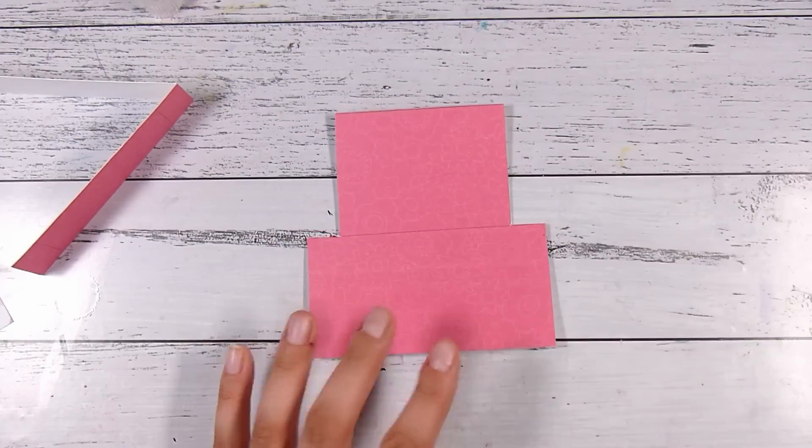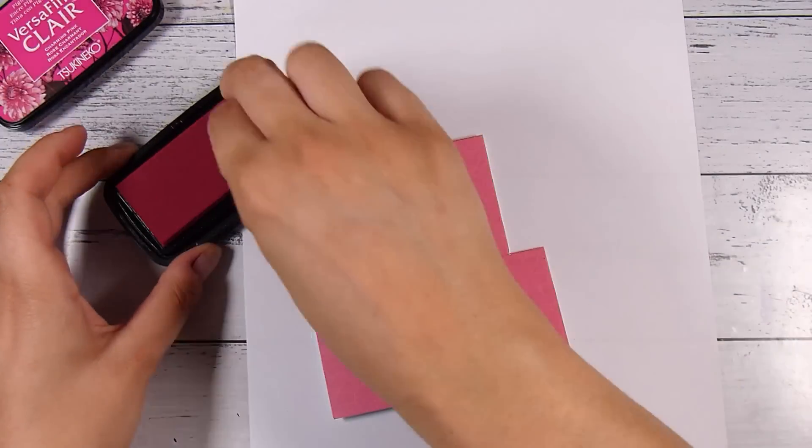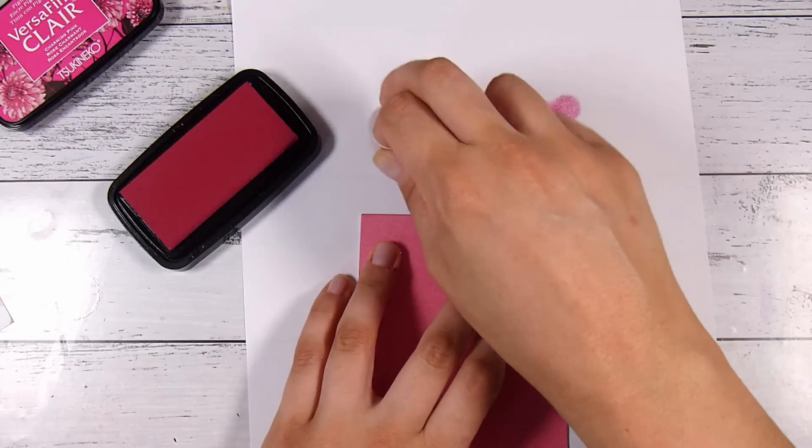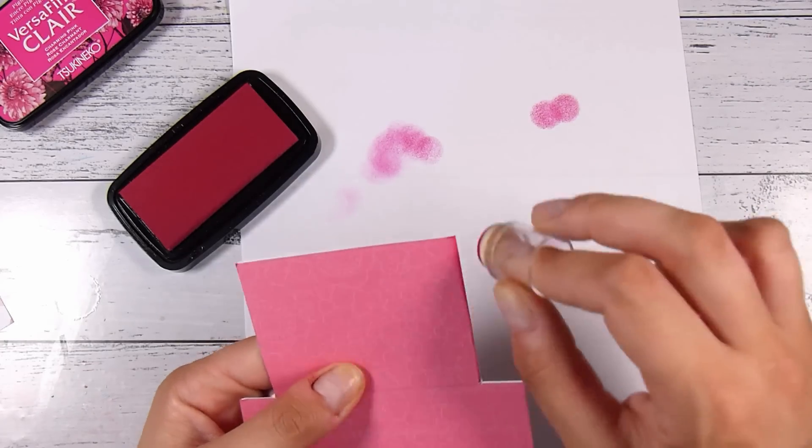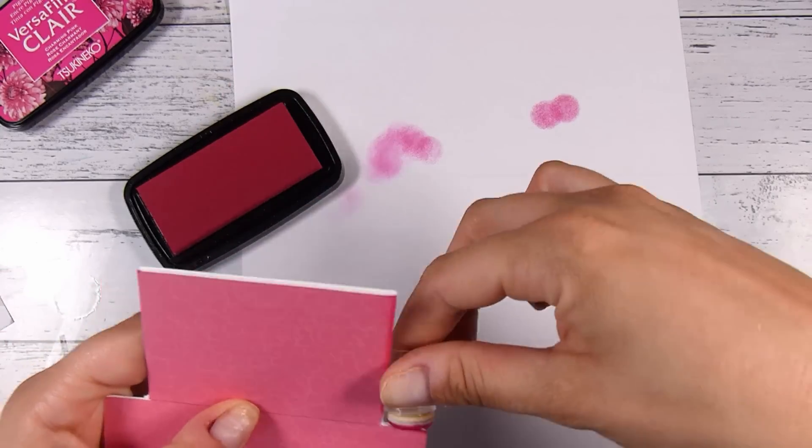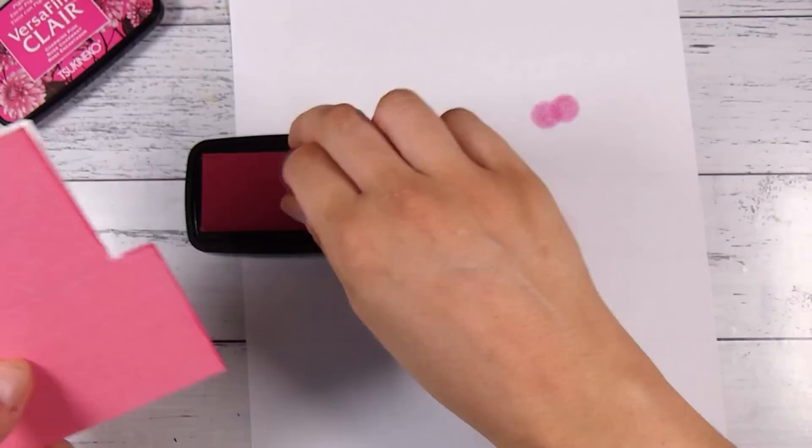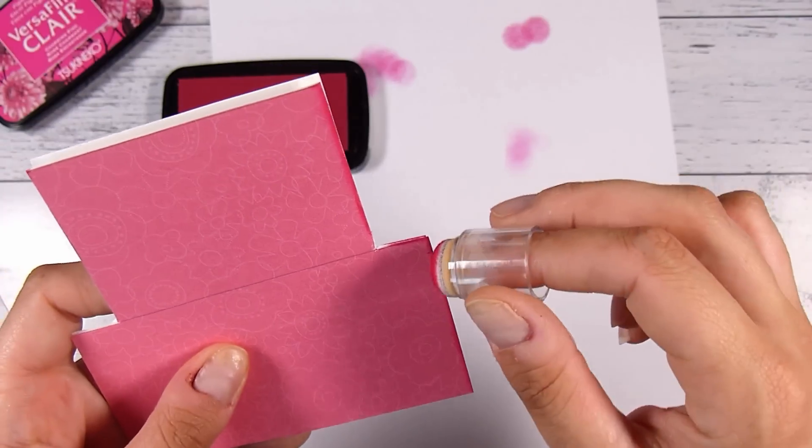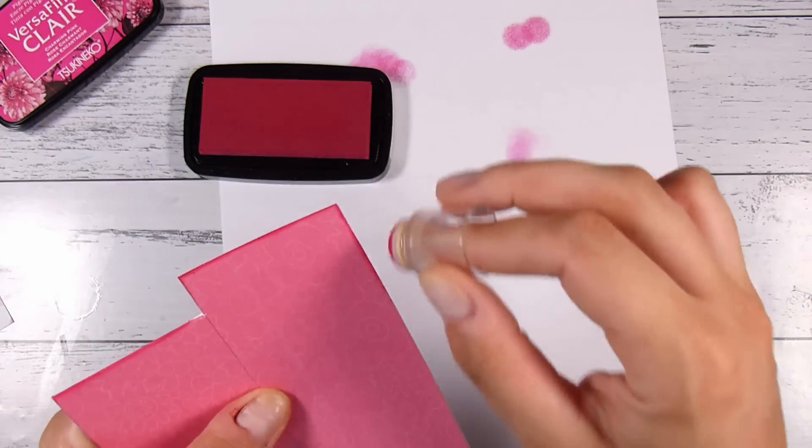When it comes to this part, this is all completely optional. I wanted to ink up the edges just a little bit. I do find when I'm going to use patterned paper and things I quite like inking up the edges. You can skip this. I prefer just to use a little finger dabber because it gets in all those little corners pretty good, and then I also like to do the inside as well.